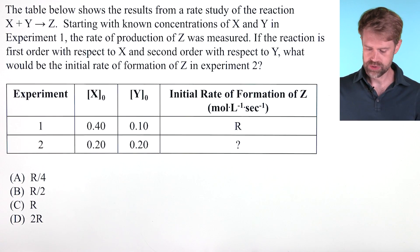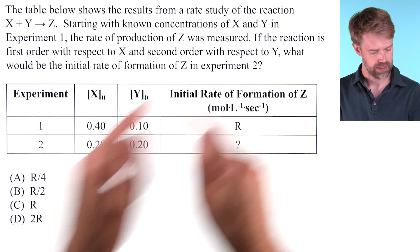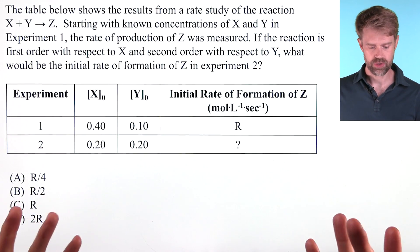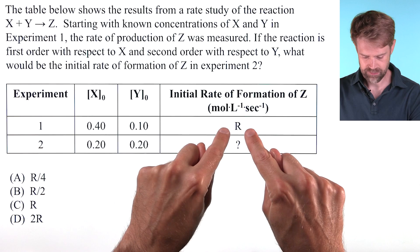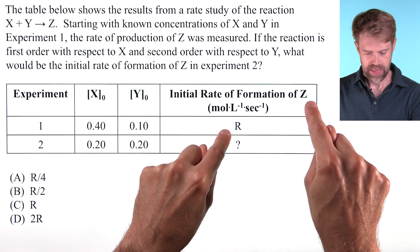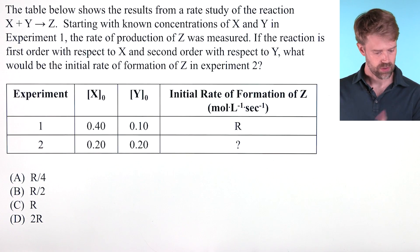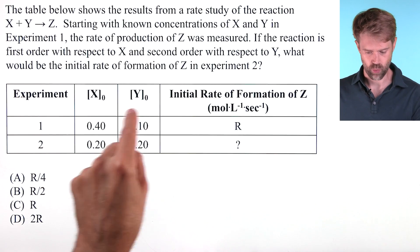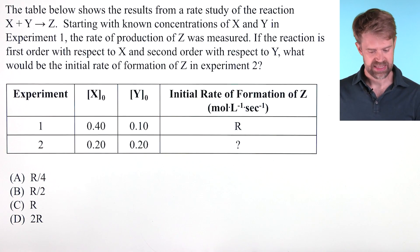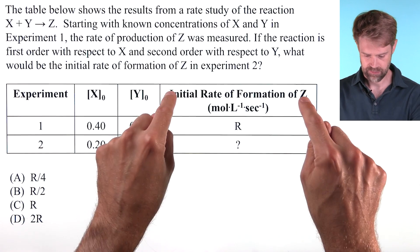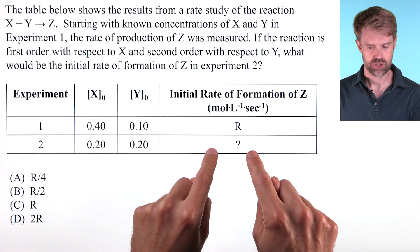Starting with known concentrations of X and Y in experiment 1, the rate of production of Z was measured. If the reaction is first order with respect to X and second order with respect to Y, what would be the initial rate of formation of Z in experiment 2?